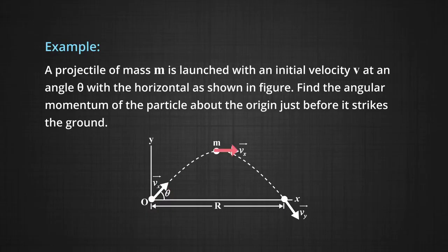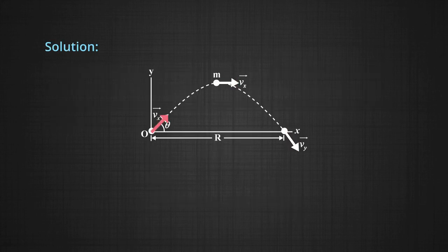Let us do a problem to understand how to find angular momentum of a given system. Consider a projectile of mass m launched with an initial velocity v at an angle theta with horizontal as shown in the figure. Find its angular momentum just before it strikes the ground, with the point of projection taken as origin. The particle is projected with velocity v at angle theta with horizontal. Its speed will be the same when it strikes the ground, and the angle it makes with the ground will be equal to the angle at the time of projection.